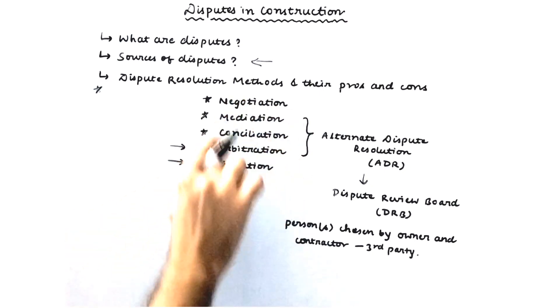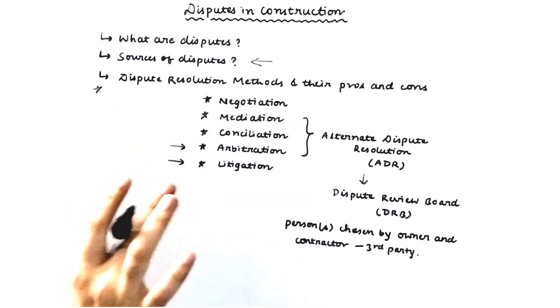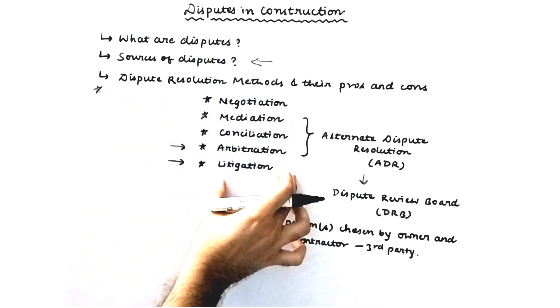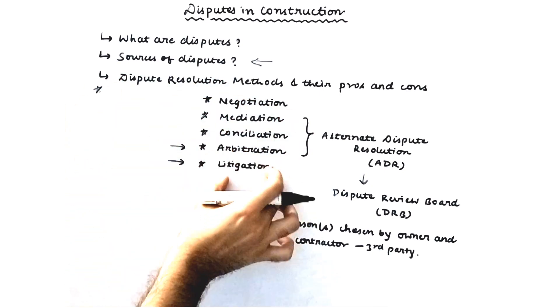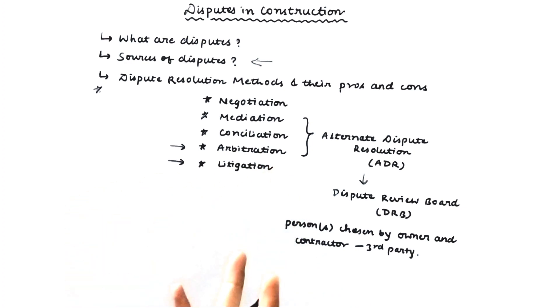It is called alternate dispute resolution because litigation usually takes place in a public forum — courts — whereas mediation, conciliation, and arbitration are kept confidential and are not discussed in public platforms. That is why these are called alternate dispute resolution methods, as compared to litigation which is a direct, formal method involving a panel of judges.